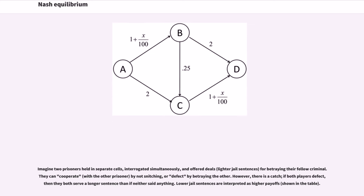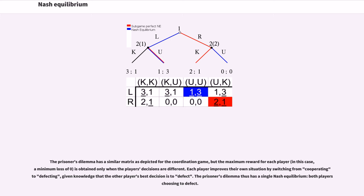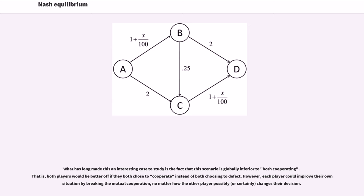Imagine two prisoners held in separate cells, interrogated simultaneously, and offered deals for betraying their fellow criminal. They can cooperate by not snitching, or defect by betraying the other. However, there is a catch: if both players defect, then they both serve a longer sentence than if neither said anything. Lower jail sentences are interpreted as higher payoffs. The prisoner's dilemma has a similar matrix as depicted for the coordination game, but the maximum reward for each player is obtained only when the players' decisions are different. Each player improves their own situation by switching from cooperating to defecting, given knowledge that the other player's best decision is to defect. The prisoner's dilemma thus has a single Nash equilibrium: both players choosing to defect. What has long made this an interesting case to study is the fact that this scenario is globally inferior to both cooperating. That is, both players would be better off if they both chose to cooperate instead of both choosing to defect.